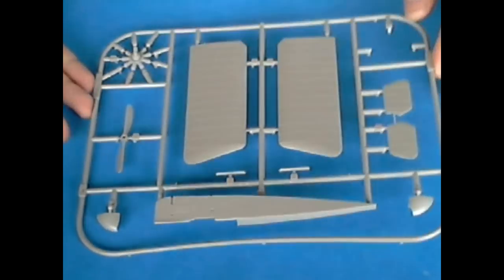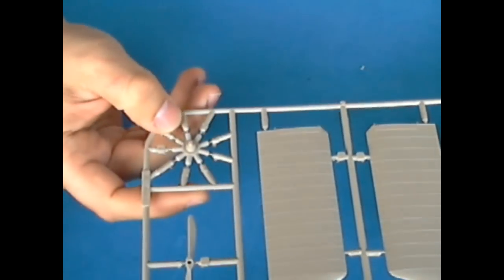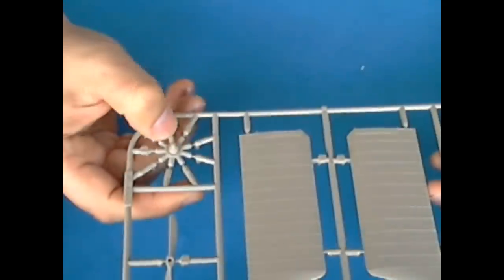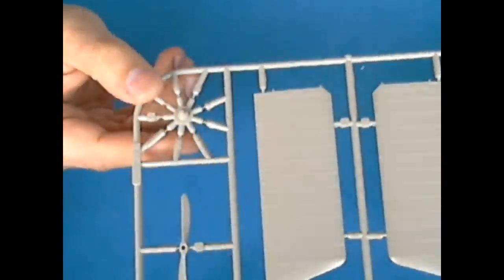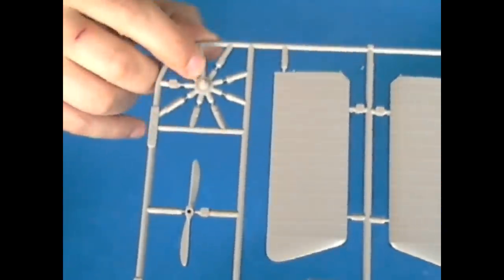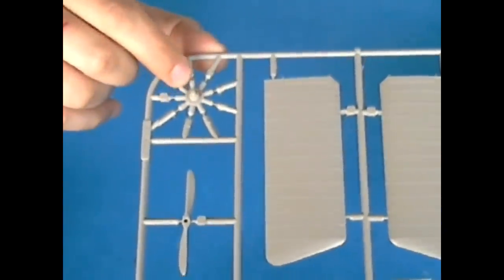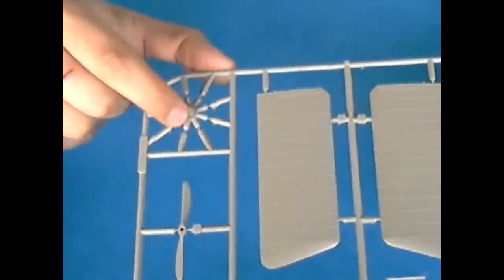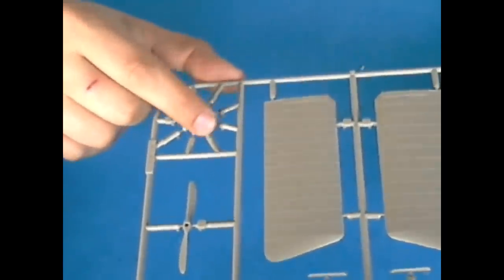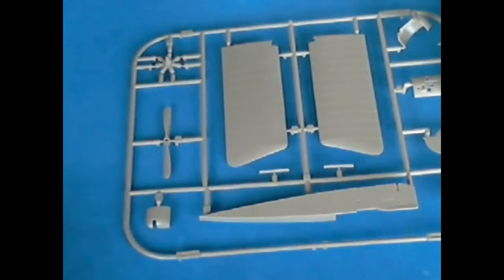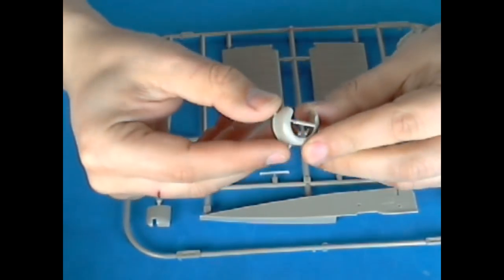This is just a small tip. Engine detail here is very cool. As you can see, you can actually see all the valves, nuts, bolts. Second sprue, engine cowling here.